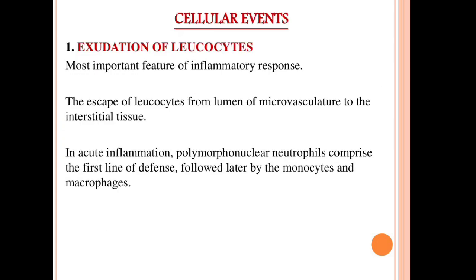Next are cellular events. Exudation of leukocytes is an important feature of the inflammatory response — the escape of leukocytes from the lumen of the microvasculature to the interstitial tissues. In acute inflammation, polymorphonuclear neutrophils comprise the first line of defense, followed by monocytes and macrophages.